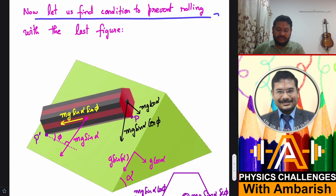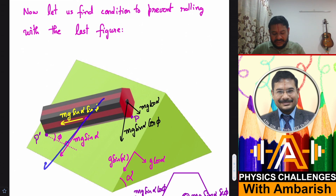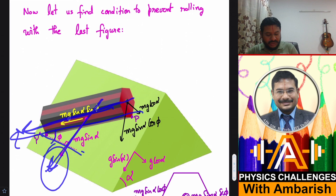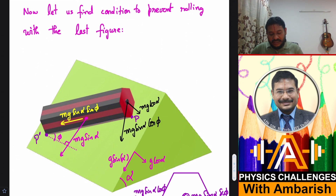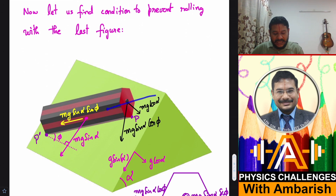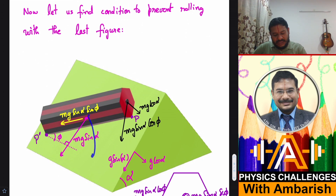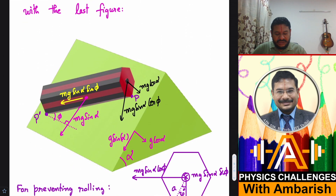Let's find the condition to prevent rolling. mg acts vertically downward with a component mg sin alpha in the plane and mg cos alpha perpendicular to it. mg sin alpha can be further decomposed: since the angle between the pencil axis and the line of greatest slope is phi, the component along edge PP' is mg sin alpha × sin phi, and the component perpendicular to the pencil axis trying to cause rolling is mg sin alpha × cos phi.